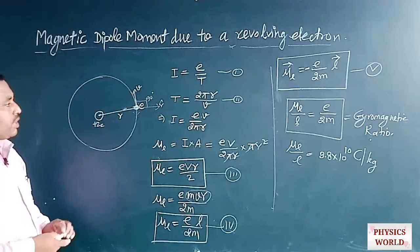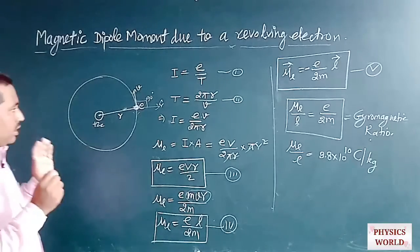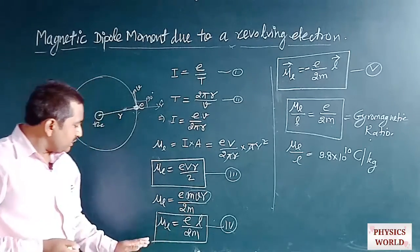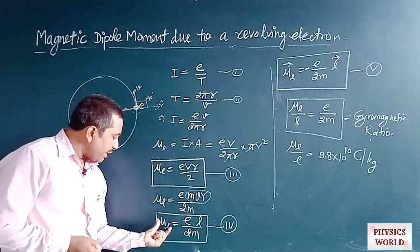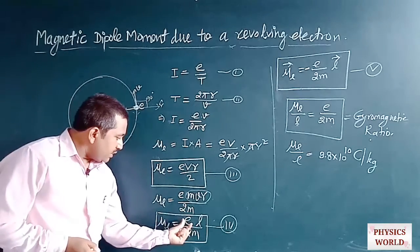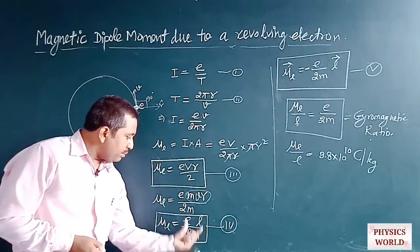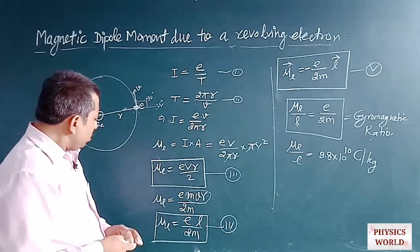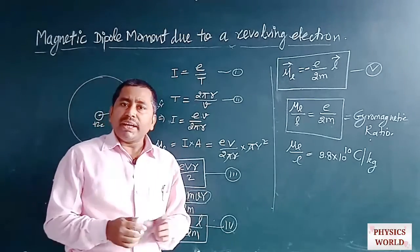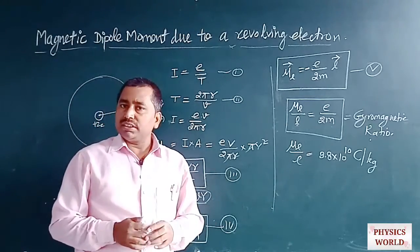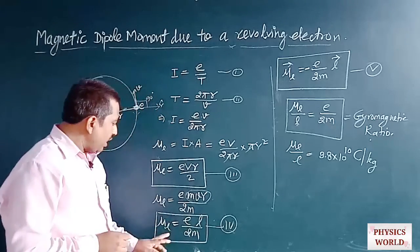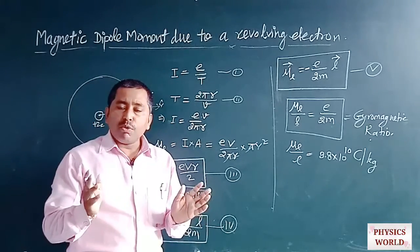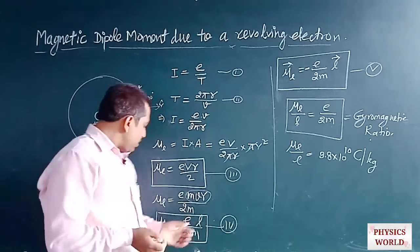Now, the magnitude of the magnetic moment is μL = E × L / (2m). Applying Bohr's postulates, we can calculate the minimum magnetic moment possessed by the electron.